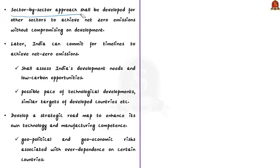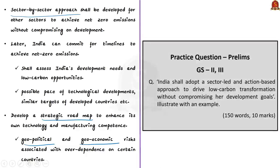Such efficiency measures would reduce greenhouse gas emissions, lower consumer electricity bills, and give India the opportunity to become a global leader in production of clean appliances. This sector-by-sector approach shall be developed for other sectors as well to achieve net zero emissions without compromising development. Once the economy is on a transition path, India can commit to net zero timelines — but before that, India shall undertake detailed assessments of development needs, low carbon opportunities, technological developments, and similar net zero targets of developed countries. An integrated approach rooted in developmental and climate mitigation needs will represent an ambitious, forward-looking India.